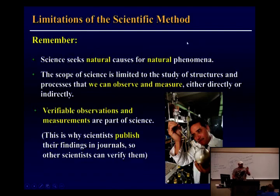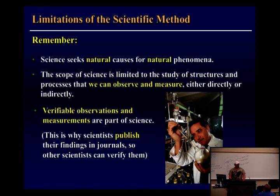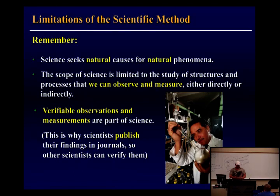Remember, we can only test things that can be measured. There may be a 14th dimension, but if you can't measure it, you can't do scientific testing on it. Scientists have to be able to critique each other's work — that's why we publish in scientific journals. Your textbook wasn't scrutinized, so they could write whatever they want. But a journal article has to be peer-reviewed and then published.